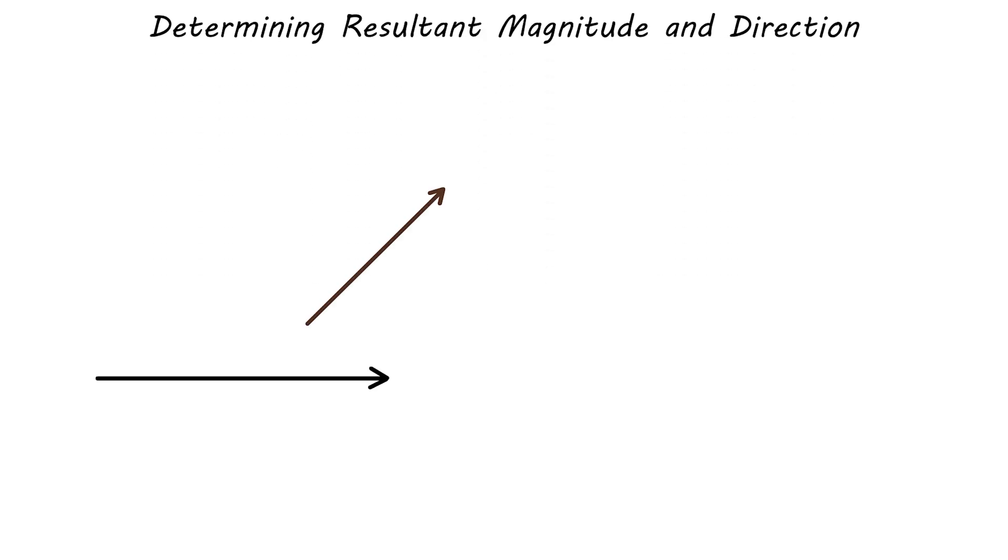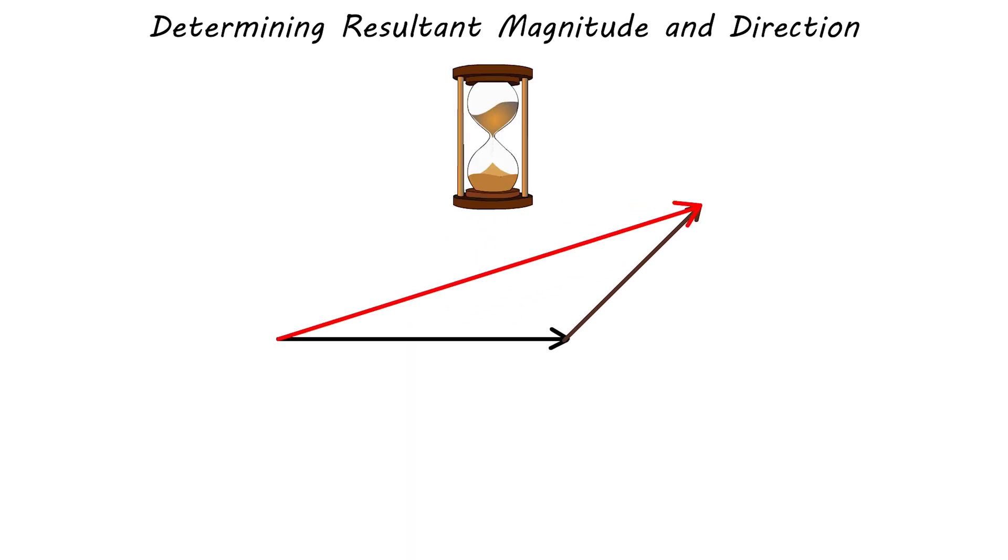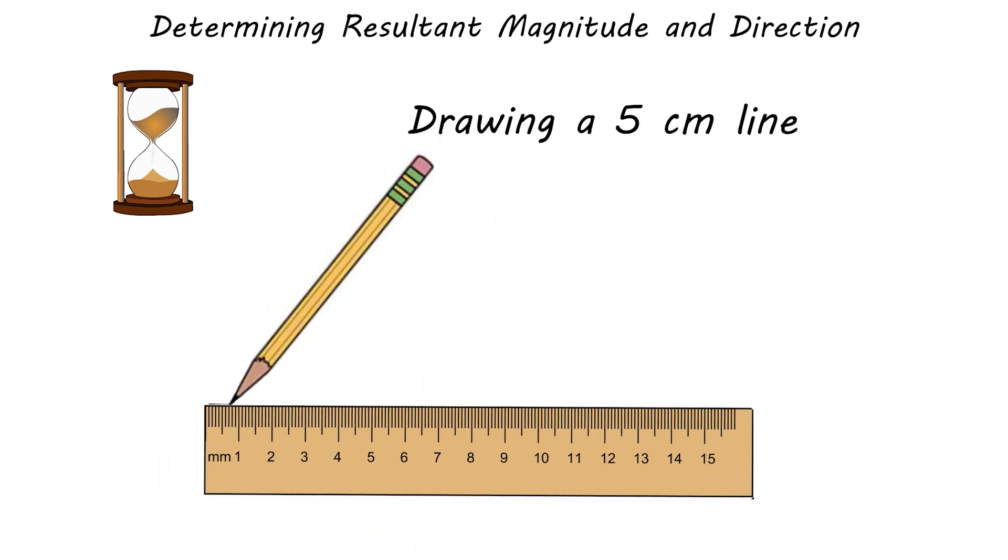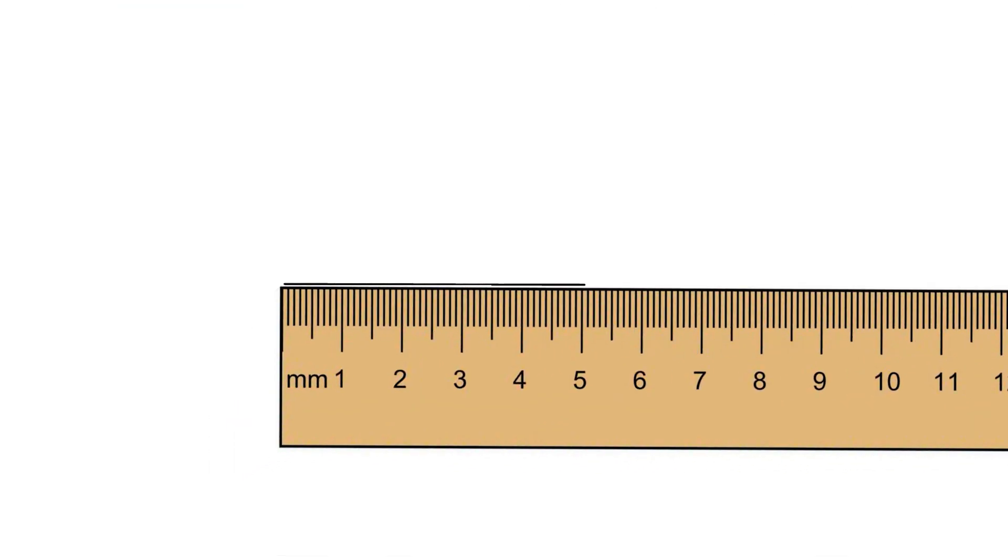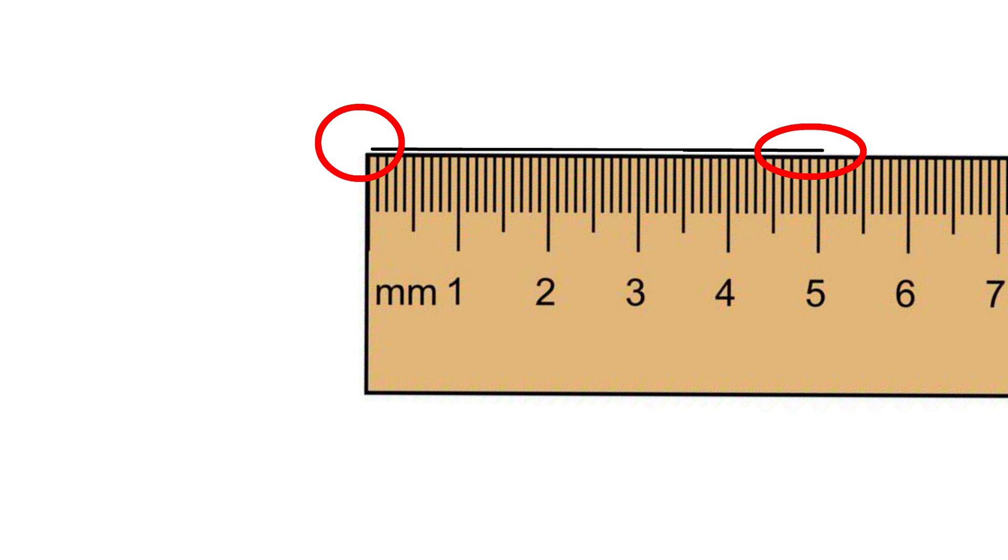Determining resultant magnitude and direction. In the previous video, we found the magnitude and direction of a resultant graphically. However, this approach is time consuming, and the accuracy of the answer depends on how carefully the diagram is drawn and measured. A simpler method uses the Pythagorean theorem and the tangent function.